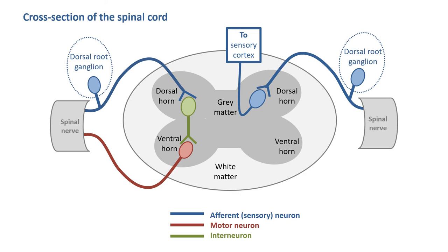Efferent motor neurons always leave via the ventral horn. This is an example of where action potentials do not necessarily need to involve the cortex - a reflex action. We have an action potential coming in via our afferent to the dorsal horn, that synapses with an interneuron, that interneuron synapses directly with a motor neuron that then leaves via the ventral horn. No brain involvement.